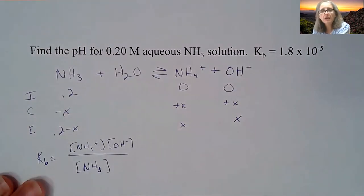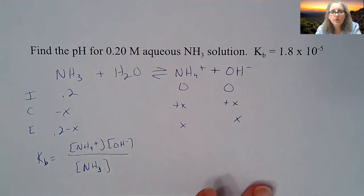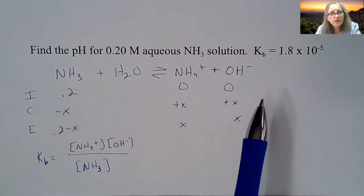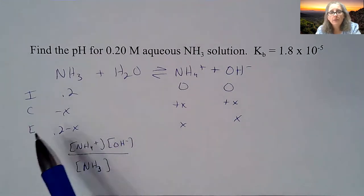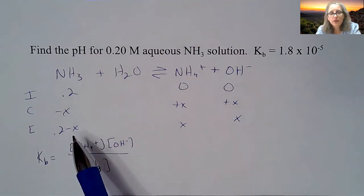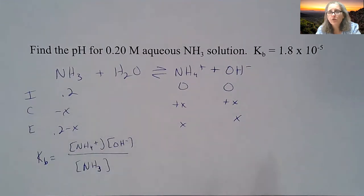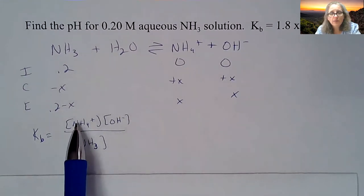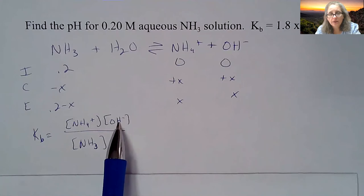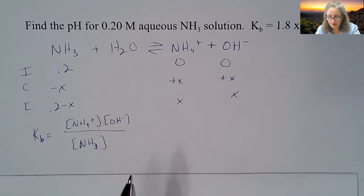Find the pH of a 0.2 molar aqueous ammonia solution if its Kb value is 1.8 times 10 to the negative 5. The only difference is Kb, you're looking at OH concentration, not H+. So you really don't need to do an ice table after this example. I just like to show you that it's going to be exactly the same if it's an acid or a base. You do want to write a Kb expression with the ammonium and the hydroxide ion on the top and ammonia on the bottom.